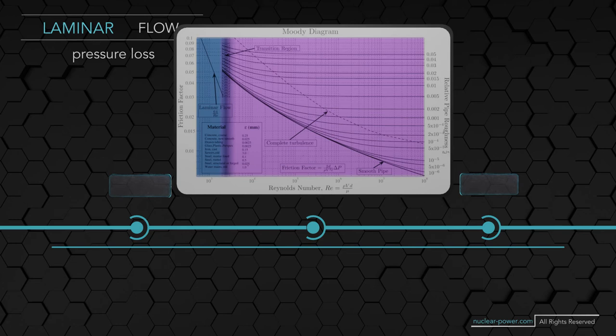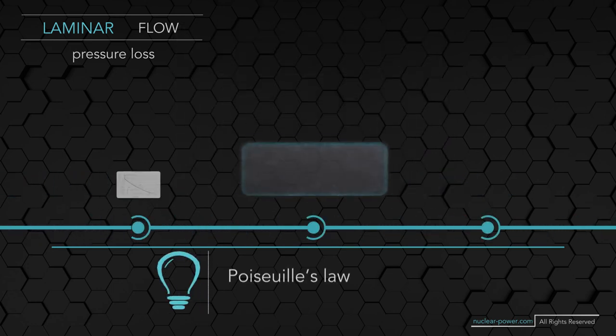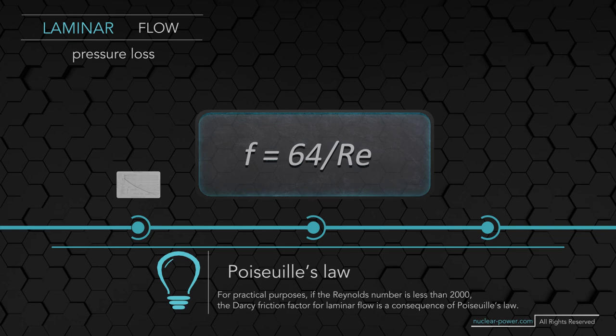For transition region and especially for turbulent region, we have to select the curve corresponding to the relative roughness of the pipe, and then we get the friction factor for the given Reynolds number. As can be seen from the Moody diagram, the pressure loss for laminar flow is proportional to velocity rather than velocity squared. Thus the friction factor is inversely proportional to velocity. For practical purposes, if the Reynolds number is less than 2000, the Darcy friction factor for laminar flow is a consequence of Poiseuille's law. For circular pipes, the friction factor can be directly calculated. For non-circular pipes, it depends on the cross-section of the pipe.